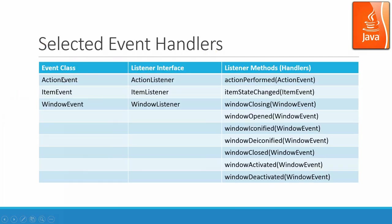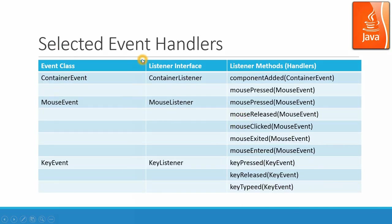Each event class can have several handlers. For example, the action event has only one handler: actionPerformed. An item event has only one handler: itemStateChanged. But a window event can have many different handlers — opening, closing, iconified, de-iconified, activated, or deactivated — depending on the window event objects being sent. For container events, the handler is componentAdded, triggered when a component is added.